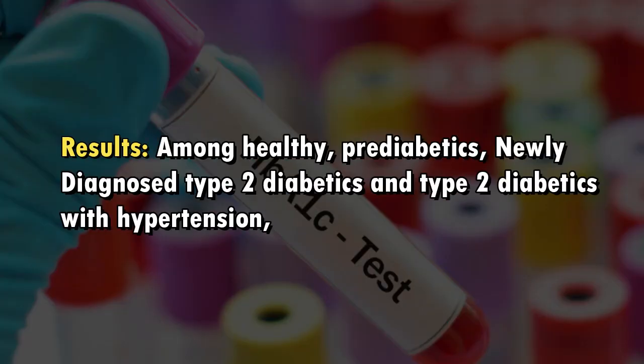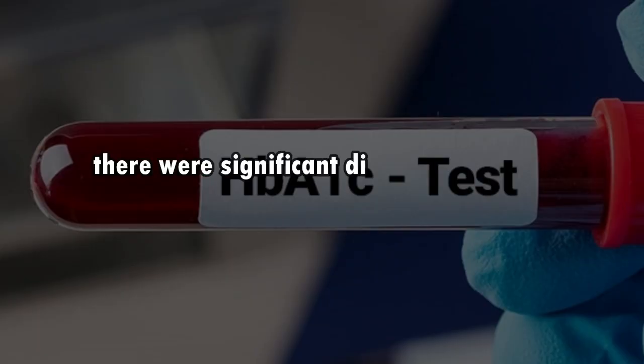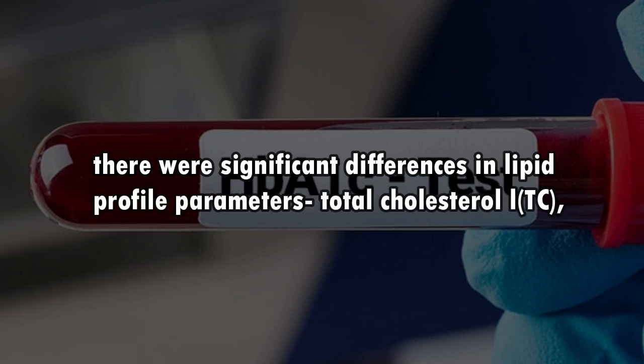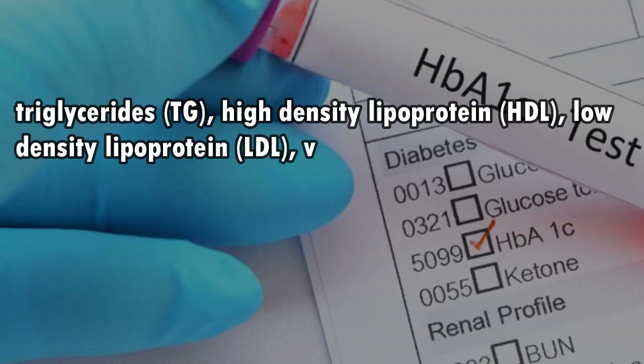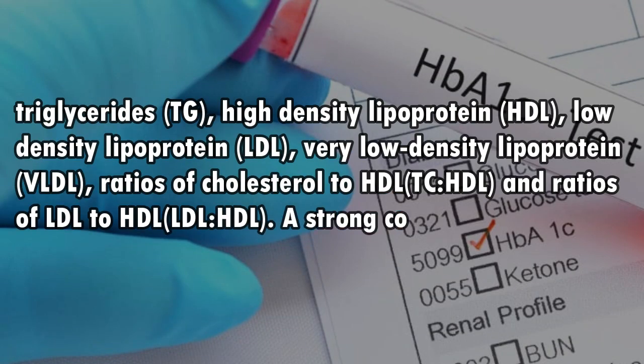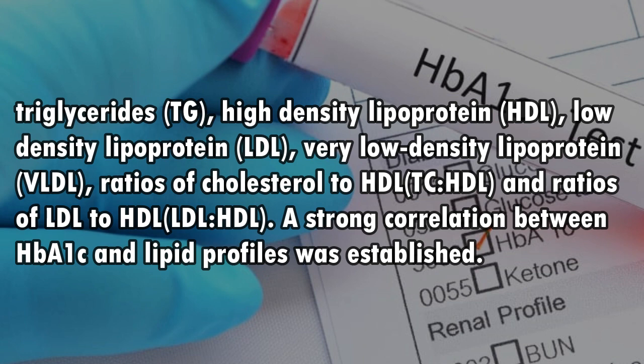Results. Among healthy pre-diabetics, newly diagnosed type 2 diabetics and type 2 diabetics with hypertension, there were significant differences in lipid profile parameters: total cholesterol (TC), triglycerides (TG), high-density lipoprotein (HDL), low-density lipoprotein (LDL), very-low-density lipoprotein (VLDL), ratios of cholesterol to HDL (TC/HDL), and ratios of LDL to HDL (LDL/HDL).